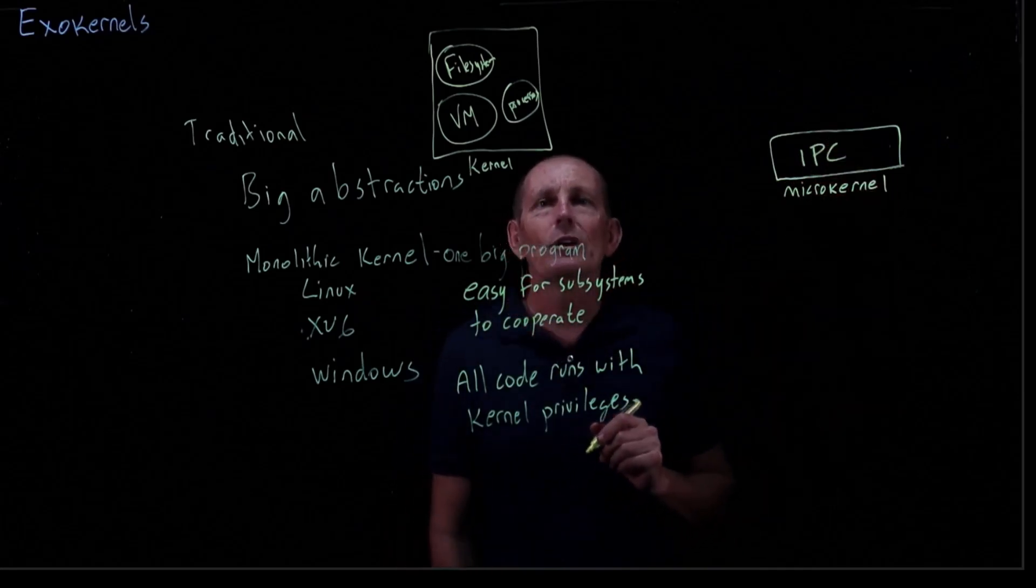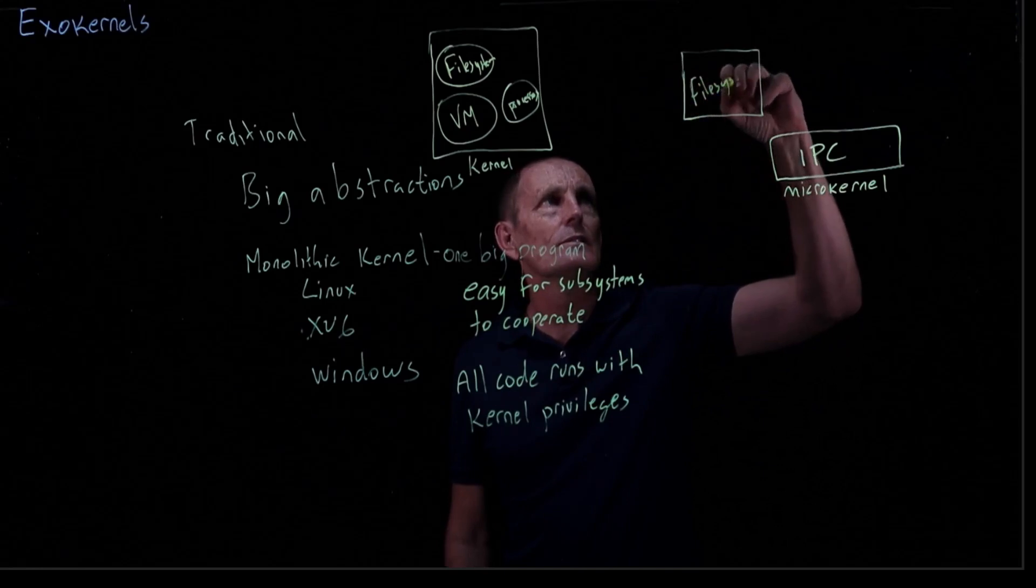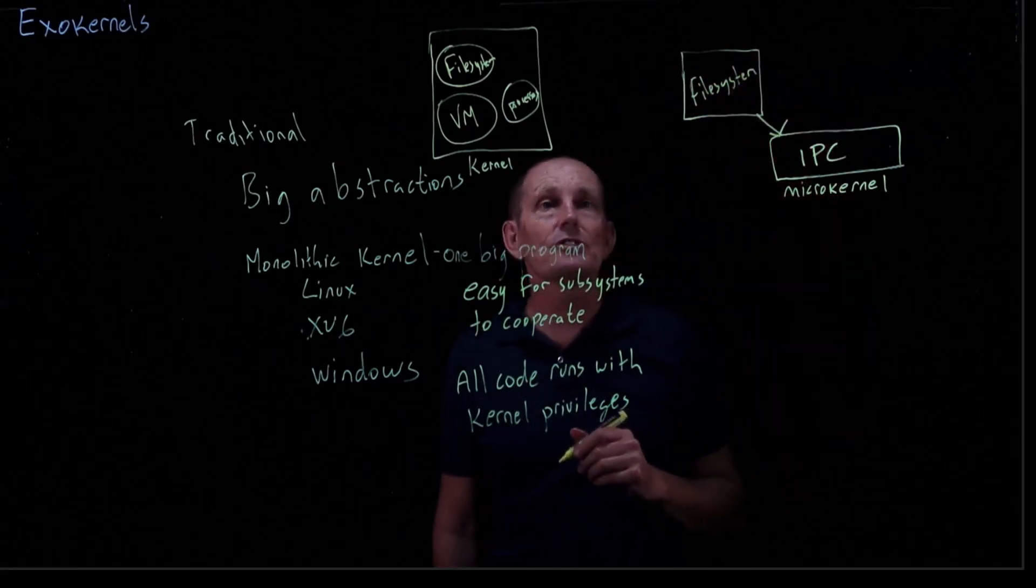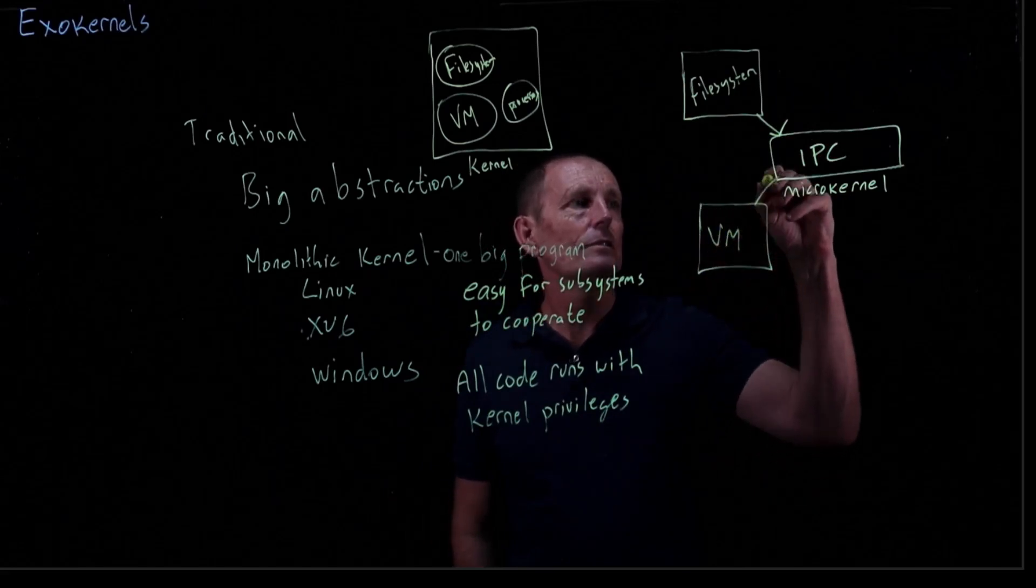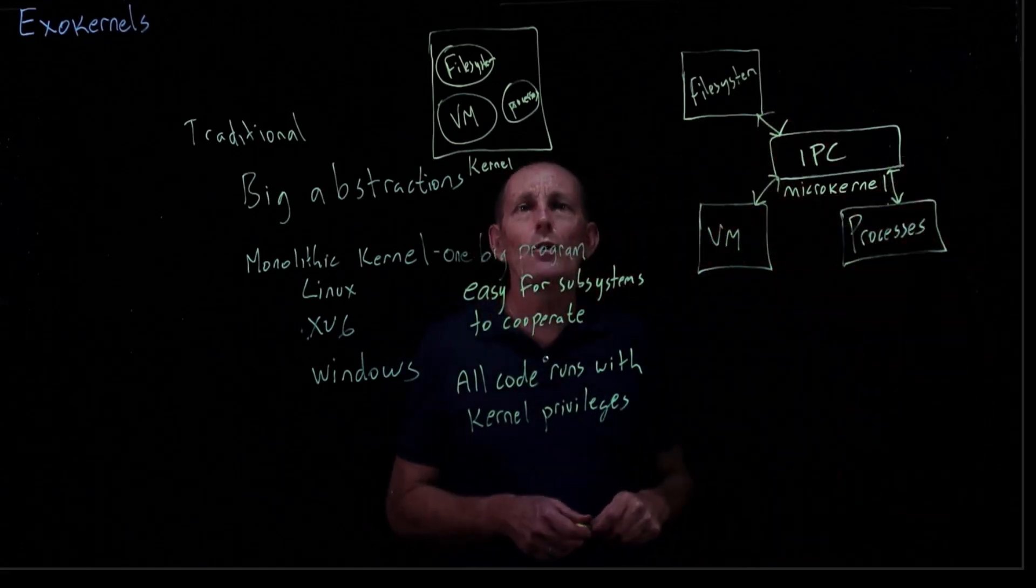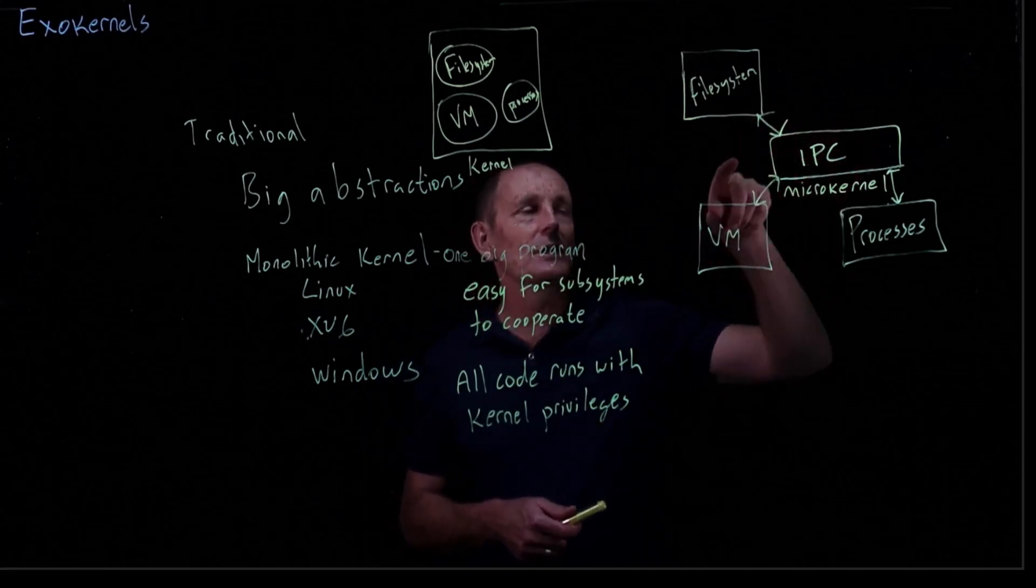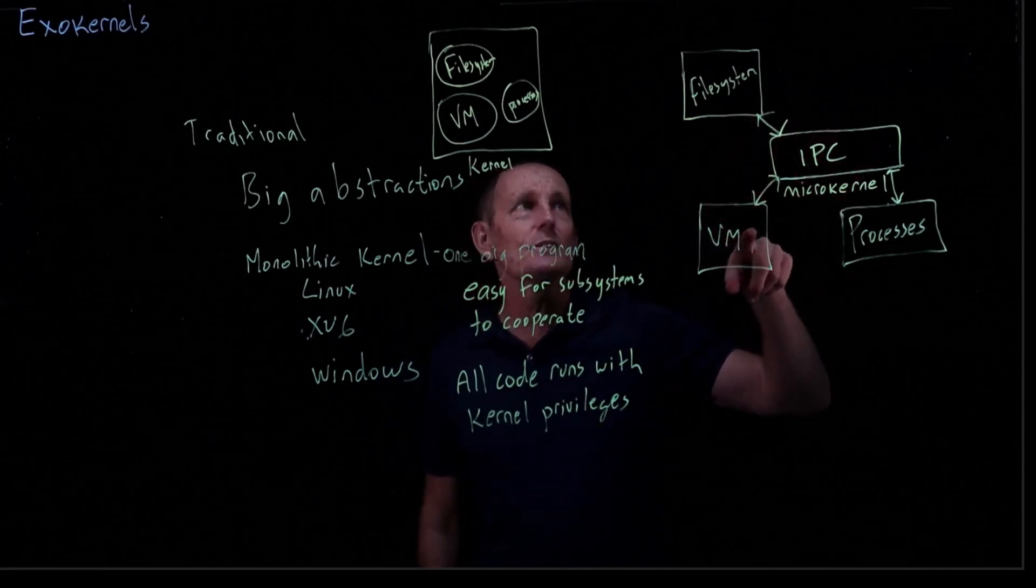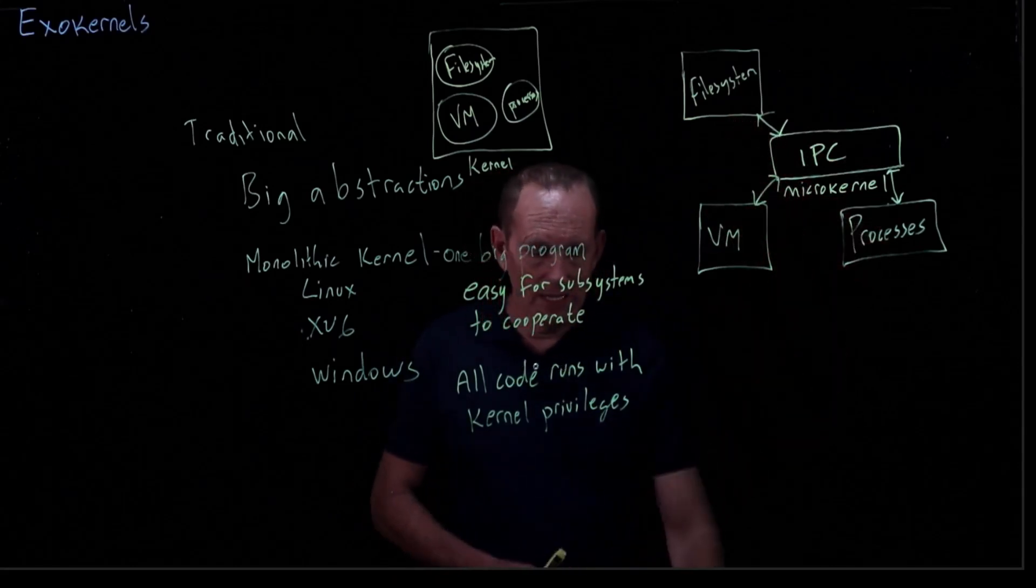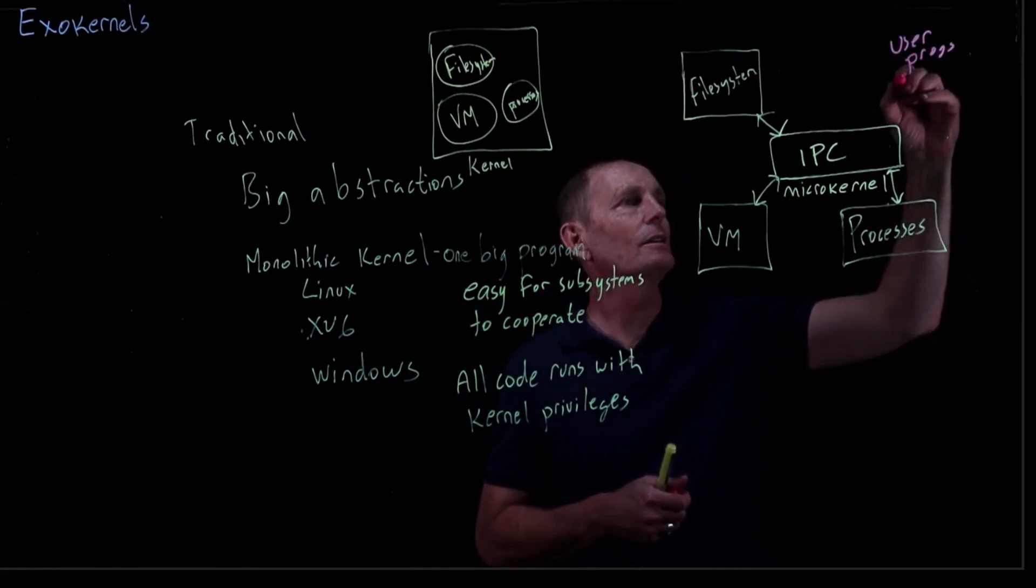And then what you would have is services that communicate via IPC with other services, possibly. So the hope is the kernel can be very fast and reliable, as long as they get fast interprocess communication. And that would allow the VM to talk to the file system, file system to talk to processes, processes to talk to files, and also allow user programs to communicate as well.